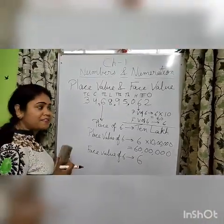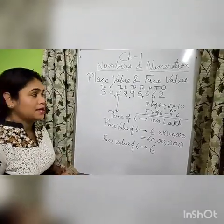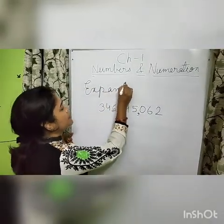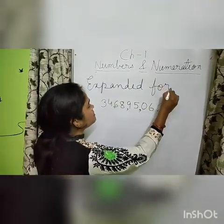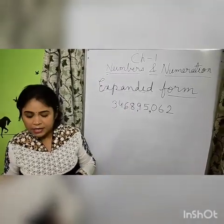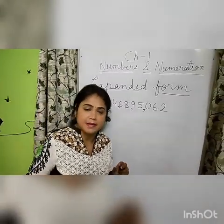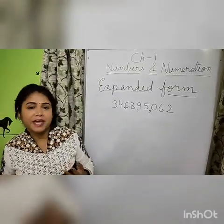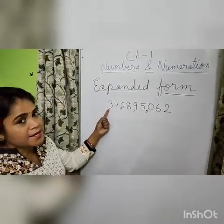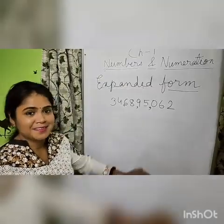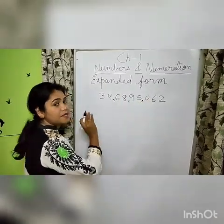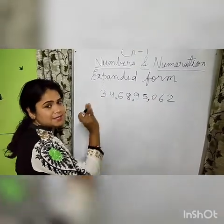Now I will explain the expanded form of any number. Expanded form is when each digit of a number is written with its place value — we get the expanded form of that number. Here we have to find the expanded form of this number, which is the sum of the place value of each digit.